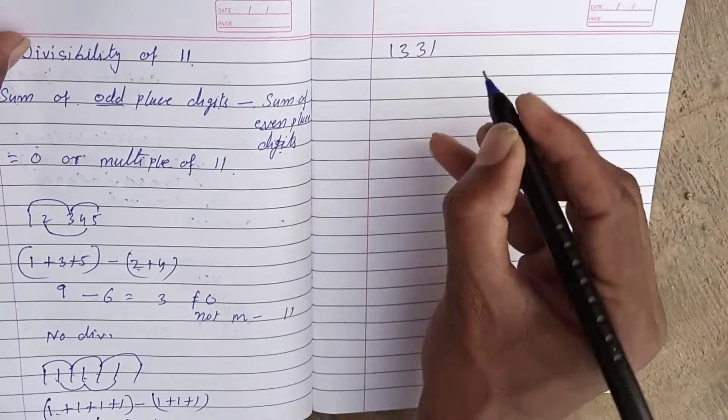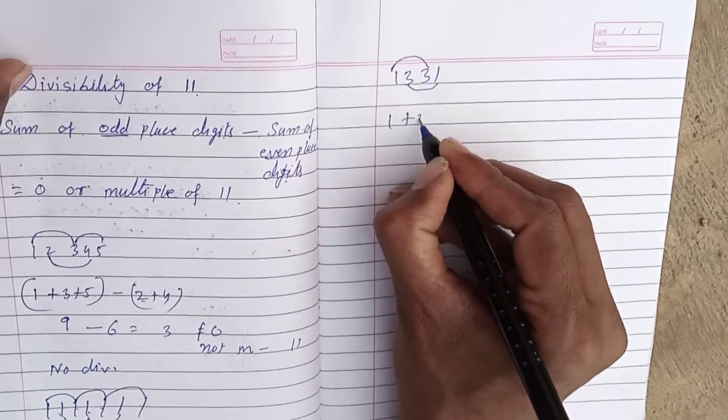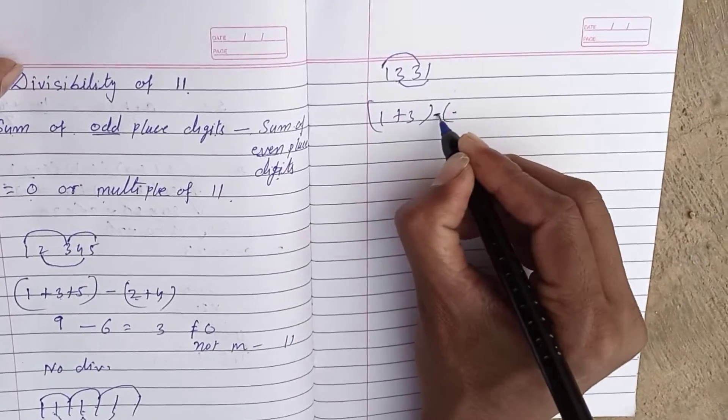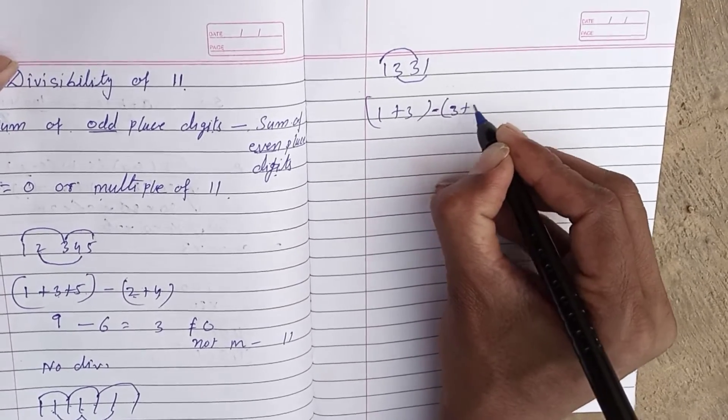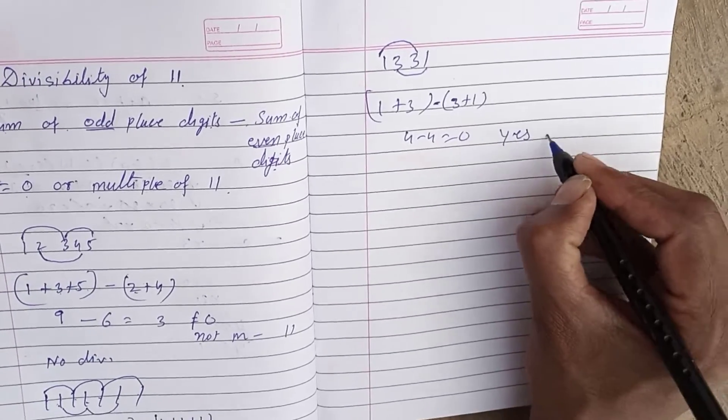Another example: 1, 3, 3, 1. One taken, one left, one taken, one left. So, 1 plus 3 minus 3 plus 1 equals 4 minus 4 equals 0. Yes, it is divisible by 11. Thank you.